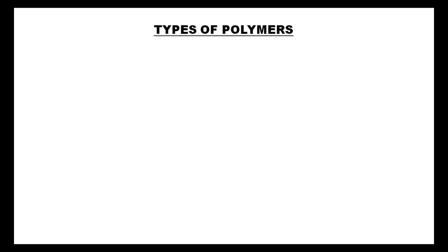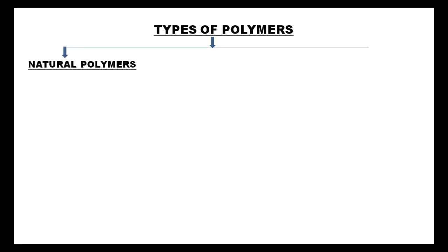Thus all the fibers are made up of polymers. There are two types of polymers: natural polymers and synthetic polymers. Fibers like wool, cotton, and silk are made up of natural polymers. Cotton is the purest natural form of cellulose.